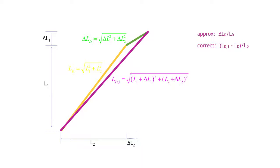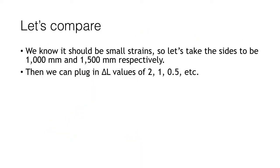The approximate solution is the delta LD, the little green component, over LD, the yellow one. Now, it's an approximation, so the way we can check it out is to look at small strains.